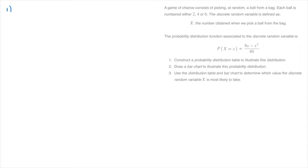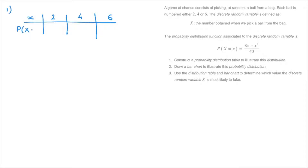For question one, we construct a probability distribution table. The discrete random variable can take values 2, 4, or 6. We make a two-row table: the top row has values 2, 4, and 6 (lowercase x), and the second row will contain P(X = x). The probability distribution function given is P(X = x) = (8x − x²)/40.